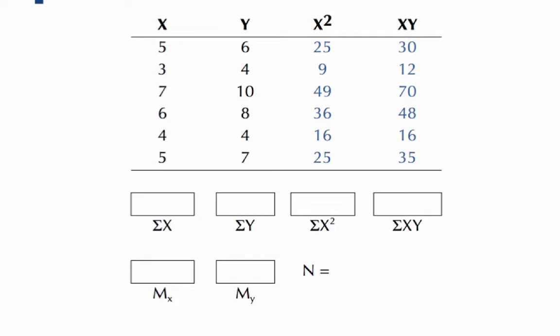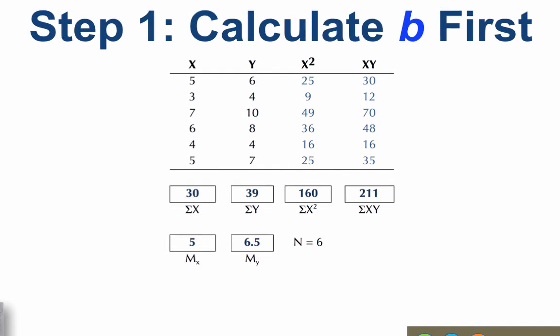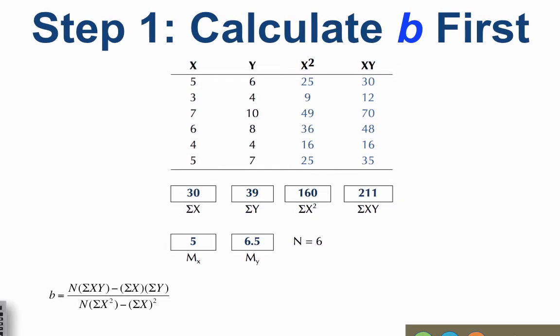The next step is to create the sum for each column. If you are doing these calculations in Excel, use the sum formula, as we learned about previously. Finally, we need the mean of x and the mean of y, which we get by dividing each sum by n. N is 6 because there are six pairs of scores, so the mean of x is 5, the mean of y is 6.5.